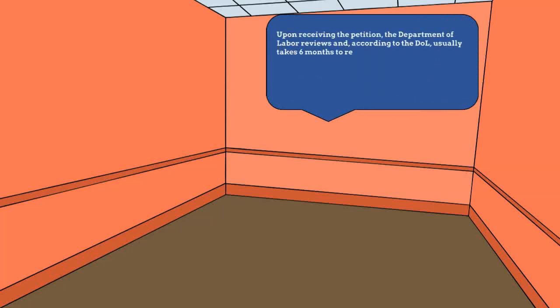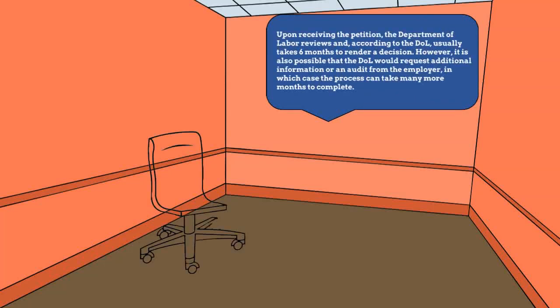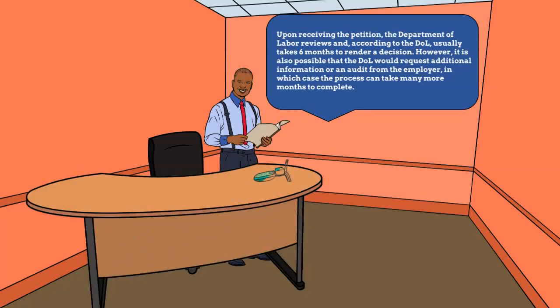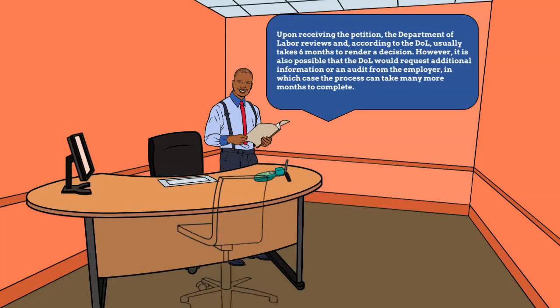Upon receiving the petition, the Department of Labor reviews and it usually takes six months to render a decision. However, it is also possible that the Department of Labor would request additional information or an audit from the employer, in which case, the process can take many more months to complete.